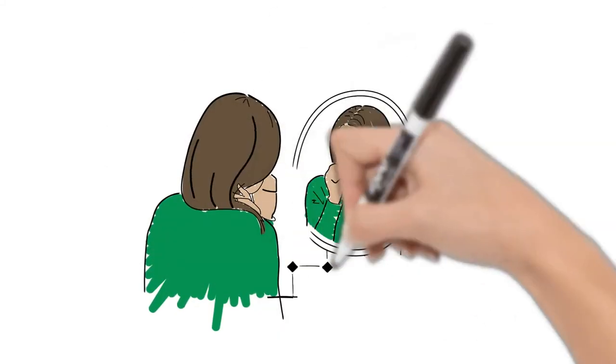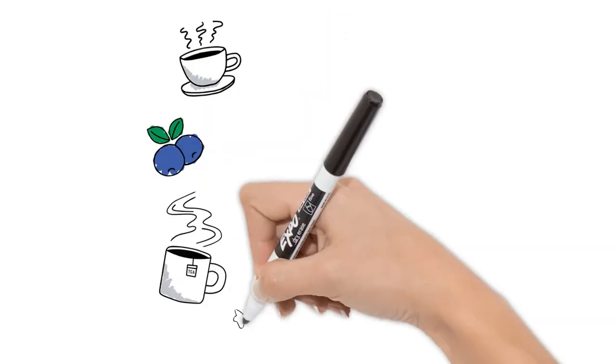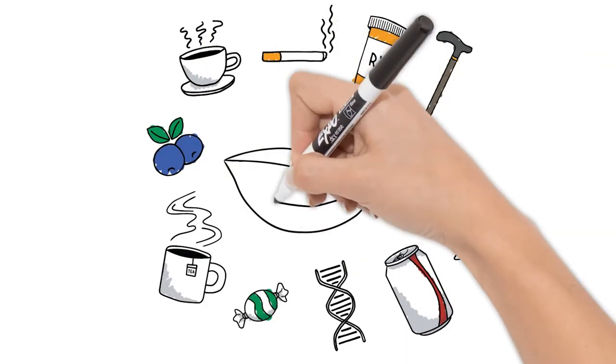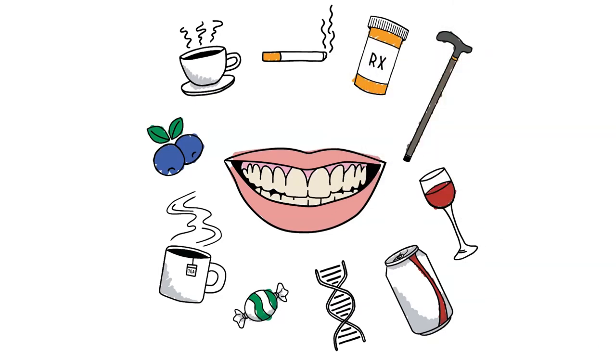If you've whitened with a quality product like Opalescence whitening, teeth whitening will leave you with a bright smile long after your treatment is over. However, things like genetics, diet, age, some medications and lifestyle habits may affect the length of your whitening results.